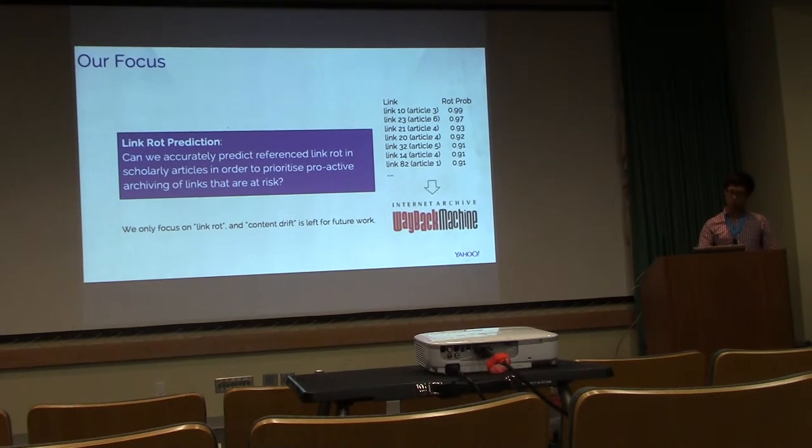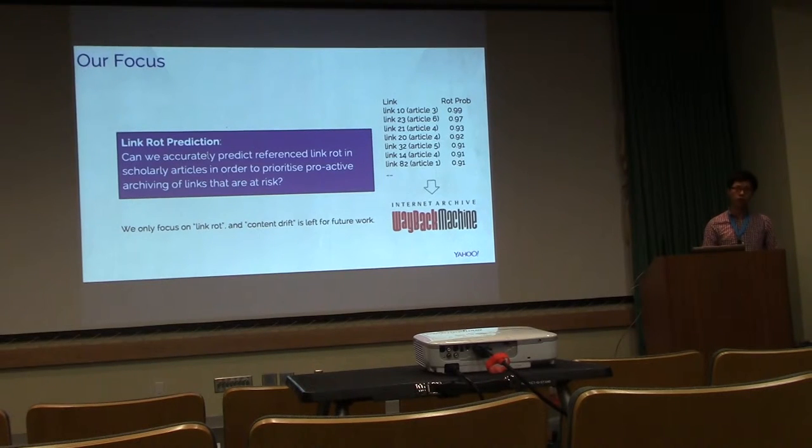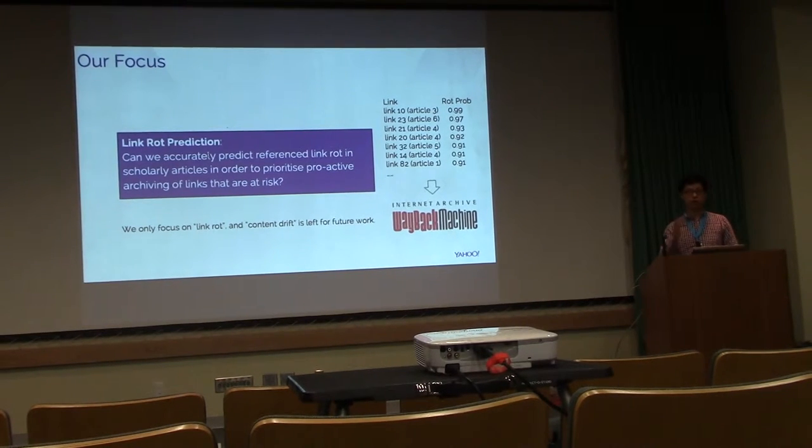Therefore, this is the focus of our paper. We want to develop machine learning techniques to try to see can we accurately predict the link rot likelihood of all those links that are referenced in scholarly articles. And if we can predict that, can we use this information to guide the archival solution to prioritize proactively archiving the links that are more likely to rot. In this work, we only focus on link rot. The content drift is left for future work.